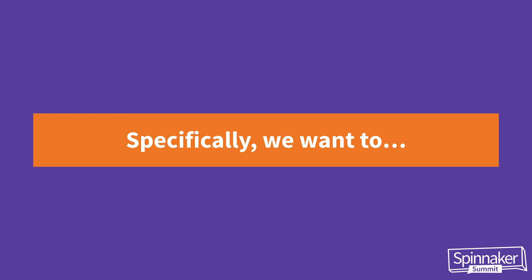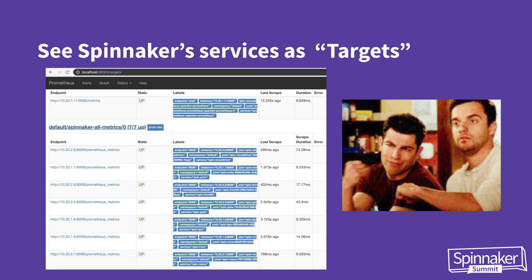Specifically, the end state I'm going to take you to includes these things. You want to be able to pull up Prometheus and see Spinnaker as what Prometheus calls targets. In this screen, all those blue things are Kubernetes pod labels, and each row represents the different microservices that compose Spinnaker — CloudDriver, Orca, Echo — all in that list as different targets. You can see the last time that Prometheus scraped metrics from each of them.